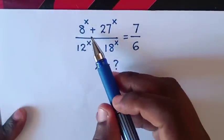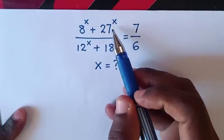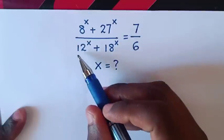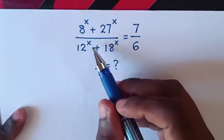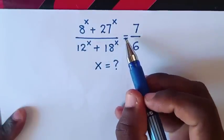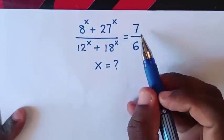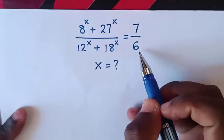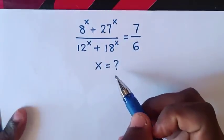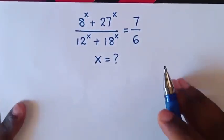How to solve: (8^x + 27^x) / (12^x + 18^x) = 7/6. Find the value of x.